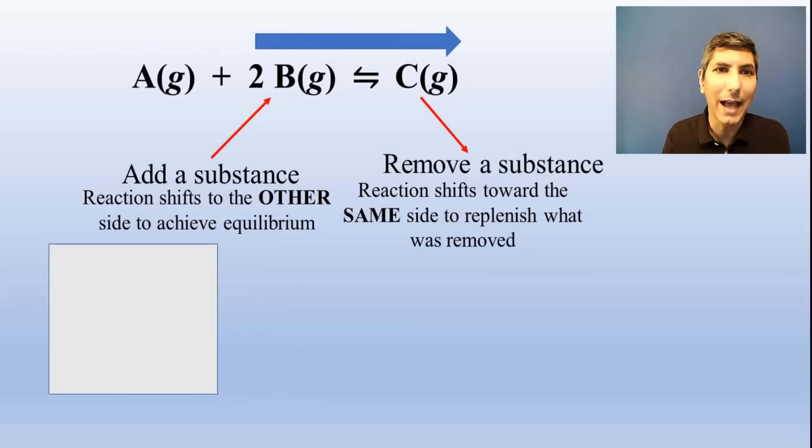If you decrease the volume, the equilibrium shifts to the side that has fewer moles of gas. And if you increase the volume, it shifts to the side that has more moles of gas. In an exothermic reaction, since heat is a product, adding heat shifts the reaction toward the reactants, while lowering the temperature shifts it toward the products. The opposite would be true for an endothermic reaction.